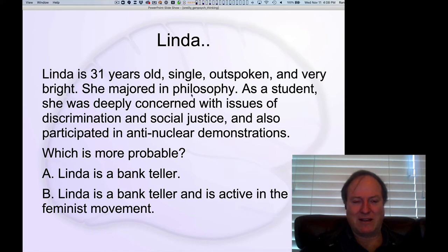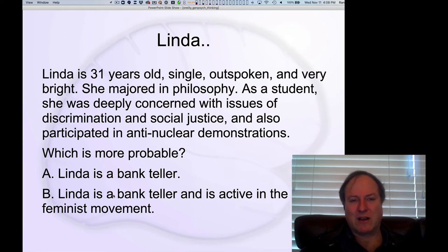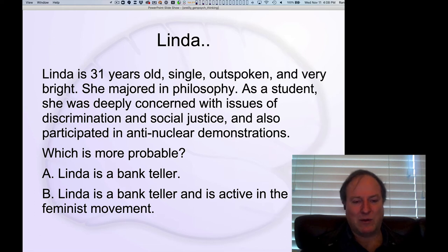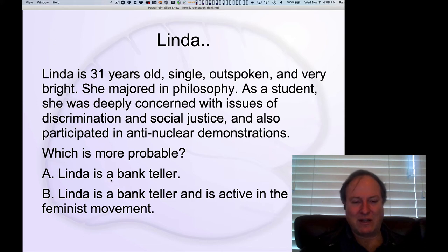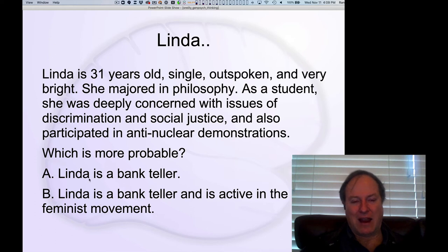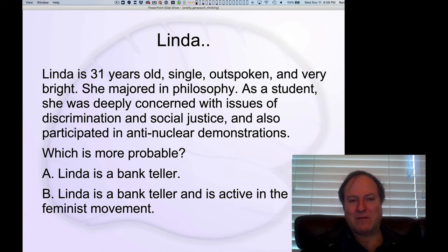From everything we've seen, it just feels like Linda is absolutely going to be a feminist — that's who she is. And so we think option B is much more representative of Linda; it fits our prototype or stereotype of her much better. So people endorse option B. But logically, it's mathematically impossible for B to be more likely than A, because A is a subset of B. If there's any chance she's not in the feminist movement, the conjunction is going to be less likely than the single condition alone. Mathematically, B is never the right answer — A always is. But everybody says B because we reason concretely about things that are familiar, representative, and consistent with our prototypes.